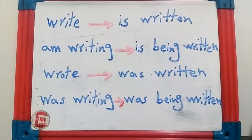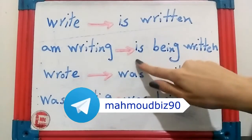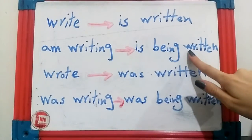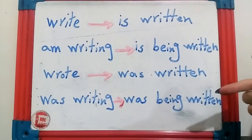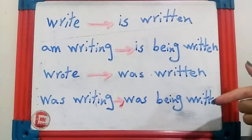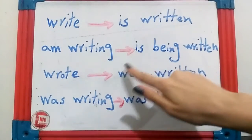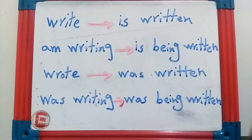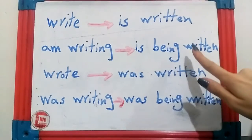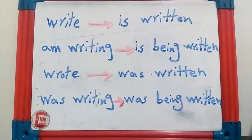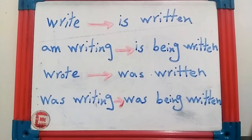The next tense is present continuous: 'am writing.' To convert present continuous to passive, the structure is: am / is / are + being + past participle of the verb. For example, if the subject is 'you,' then the to-be verb is 'are,' so it becomes 'are being written.' These helping verbs remain fixed; only the main verb changes to its past participle (third form).